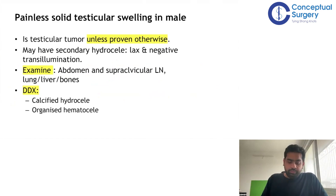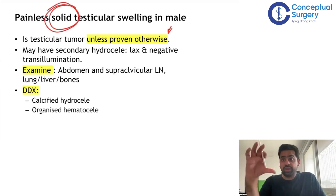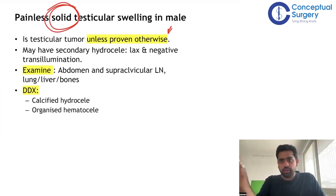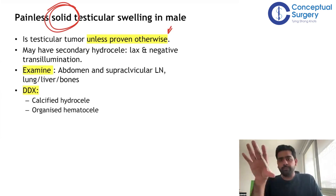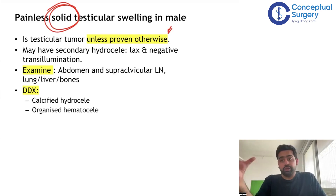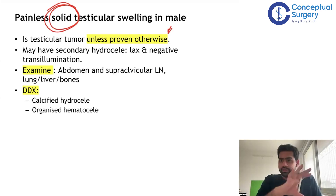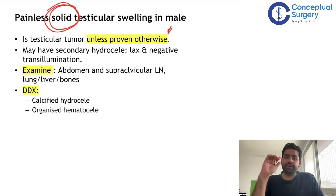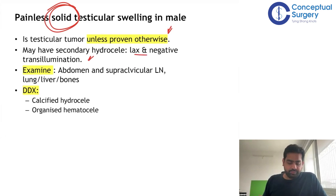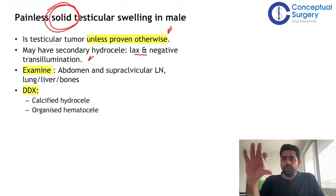A painless solid testicular swelling should be considered a testicular tumor unless proven otherwise. Hydrocele will have fluctuation, but if there is a painless solid testicular swelling in a male, you must consider it a testicular malignancy. It can be other things — a hematocele or a very tense hydrocele — but you must give it the benefit of the doubt and consider you are dealing with a testicular malignancy. A malignancy itself may also have a secondary hydrocele.